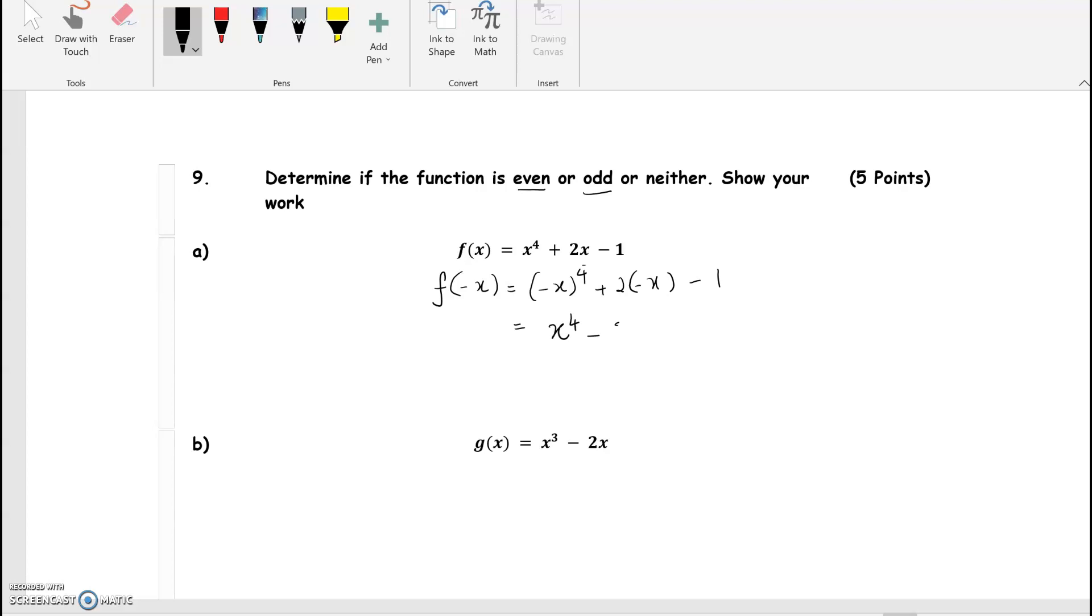So what are the conditions? If f of negative x is equal to f of x, then the function is even, which means nothing changes. Then you have an even function. But if you plug in a negative x and you get...